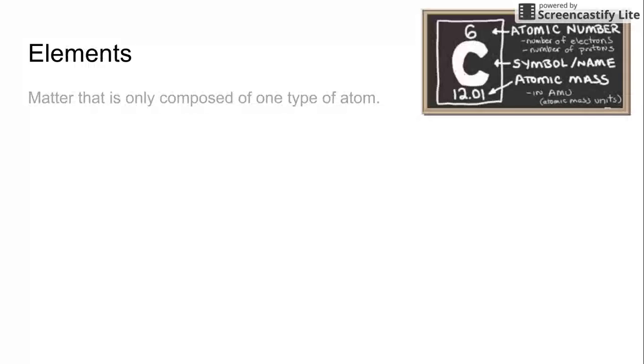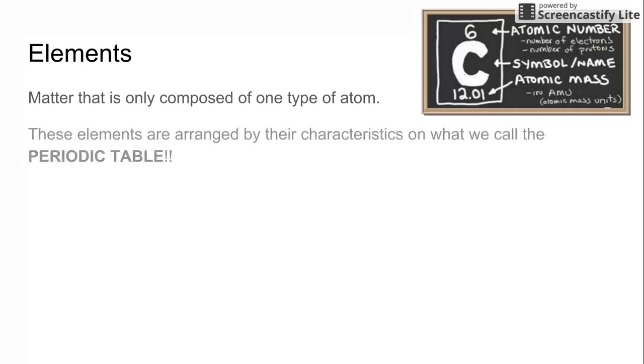So we're going to start talking about elements. And elements are matter that is only composed of one type of atom. So there's only one type of atom in an element. And these elements are arranged by their characteristics on what we call the periodic table. And we're going to start looking at the periodic table a little bit more in depth.